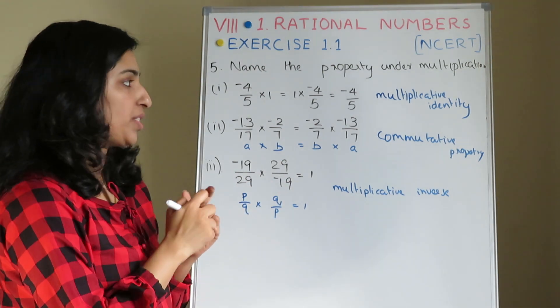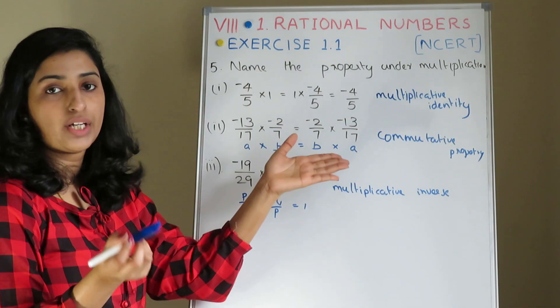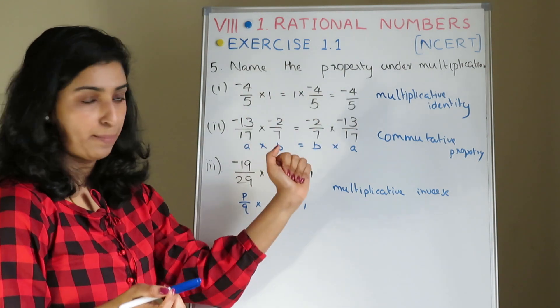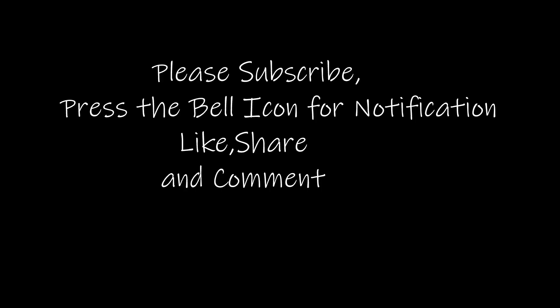So we have 3 properties. First one is Multiplicative Identity, second is Commutative Property, third is Multiplicative Inverse.